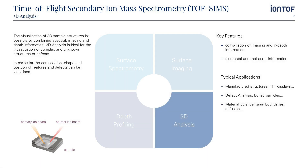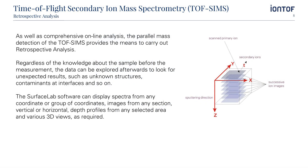The visualization of 3D sample structures is possible by combining spectral, imaging, and depth information. 3D analysis is ideal for the investigation of complex and unknown structures or defects. In particular, the composition, shape, and position of features and defects can be visualized. Key features include the combination of imaging and in-depth information, along with elemental and molecular information. The parallel mass detection of TOF-SIMS also provides the means to carry out retrospective analysis — exploring data afterwards to look for unexpected results, such as unknown structures or contaminations at interfaces.